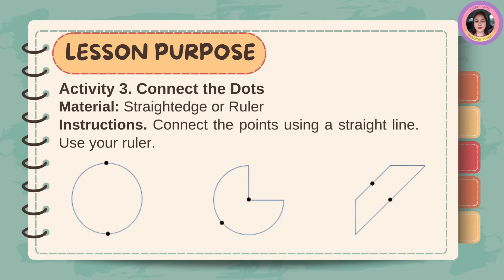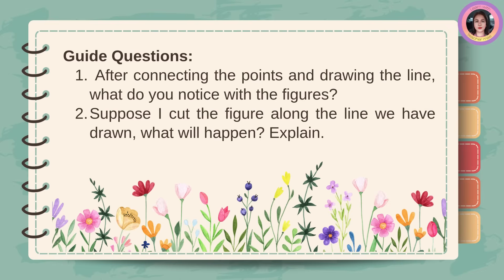Activity 3: Connect the Dots. Material: straight edge or ruler. Instructions: connect the points using a straight line. Use your ruler. After connecting the points and drawing the line, what do you notice with the figures? Suppose I cut the figure along the line we have drawn, what will happen? Explain.